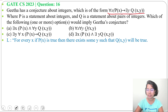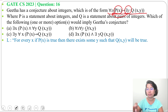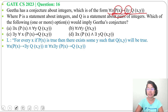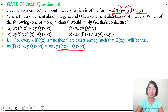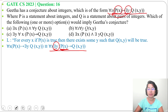Let me simplify this. Here P(x) is free from y, so we can take 'there exists y' to the left side near 'for all x'. So we can write: for all x there exists y, P(x) implies Q(x,y). As P(x) is free from y, we can take 'there exists y' before P(x), so this 'there exists y' will not affect the existence of P(x).